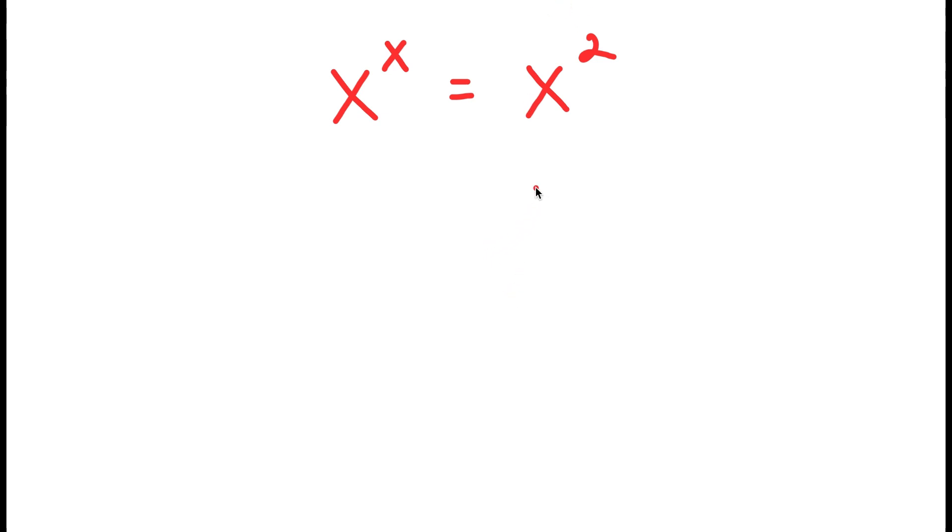To solve this, I'm going to divide both sides by x to the power of 2. So then these two cancel out to get 1, and I get x to the power of x over x to the power of 2 is equal to 1.